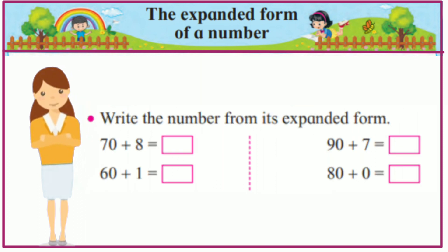Write the number from its expanded form. 70 plus 8. 78. 60 plus 1. 61. 90 plus 7. 97. 80 plus 0. 80.